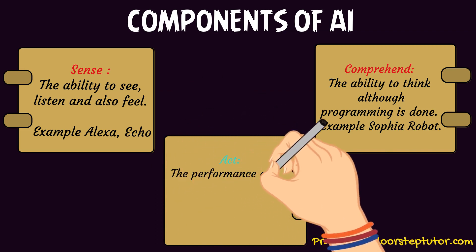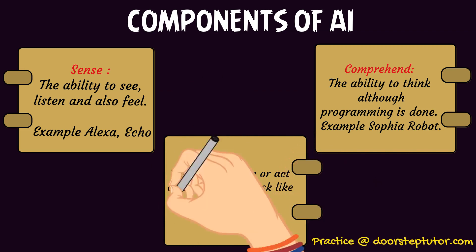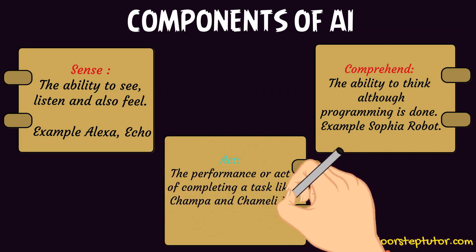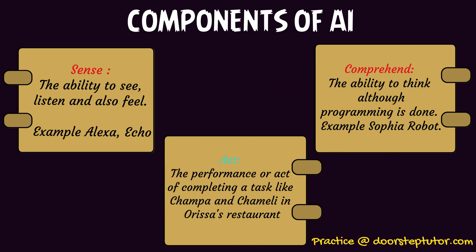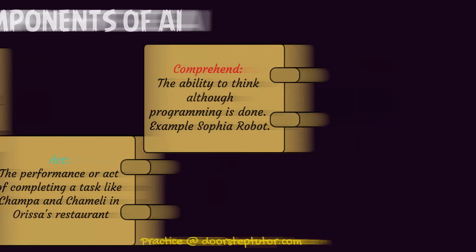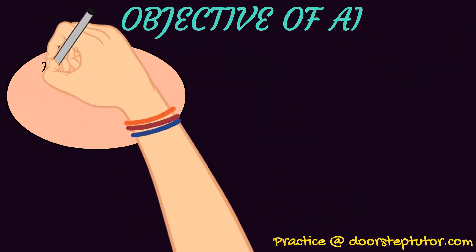The third component is act — acting is completing a task. We all know about the champa robots used in one of the famous restaurants in Odisha. They are robots that deliver food to customers sitting in the restaurant.